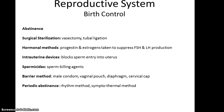Birth control options include abstinence, surgical sterilization through vasectomy or tubal ligation, hormones that trick the body into thinking it's pregnant, spermicides, and blocking methods such as an intrauterine device that blocks sperm entry. Barrier methods include the male condom, the vaginal pouch or female condom, a diaphragm, or a cervical cap. There is also periodic abstinence, meaning sex only during stages of the cycle least likely to result in pregnancy.